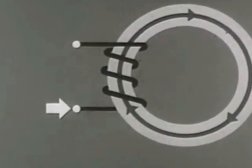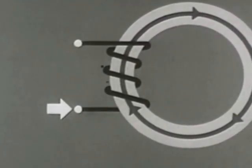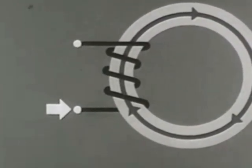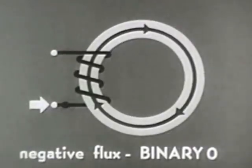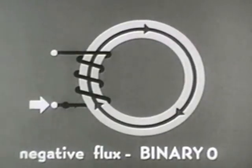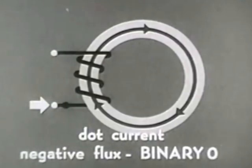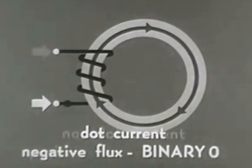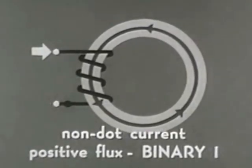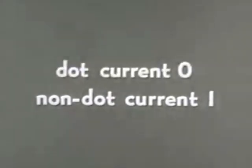To show the polarity of the winding in a core diagram, we mark one side with a black dot. By definition, current that flows into the winding from the dot side sets the core to zero. Current flowing into the non-dot side sets the core to binary one. Remember: non-dot current for one, and dot current for zero.